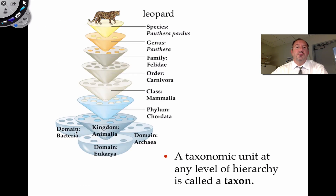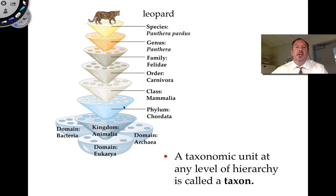There are three domains: domain Bacteria, domain Archaea, and domain Eukarya — the largest groupings. Within the domain Eukaryota, you have the kingdoms of animals, plants, and so forth. For a leopard, you go kingdom Animalia, phylum Chordata, class Mammalia, order Carnivora, and so on down to genus and species. That's the binomial system of naming.